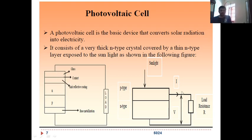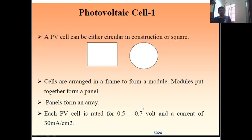There will be a very thick n-type crystal covered by a very thin n-type layer exposed to sunlight as shown in the photovoltaic figure. It can be of any shape, square or circular. Most commonly you might have seen both circular or square. Cells are arranged in a frame to form a module. Whenever a number of cells are arranged in a rectangular manner on a board, that is called a module.